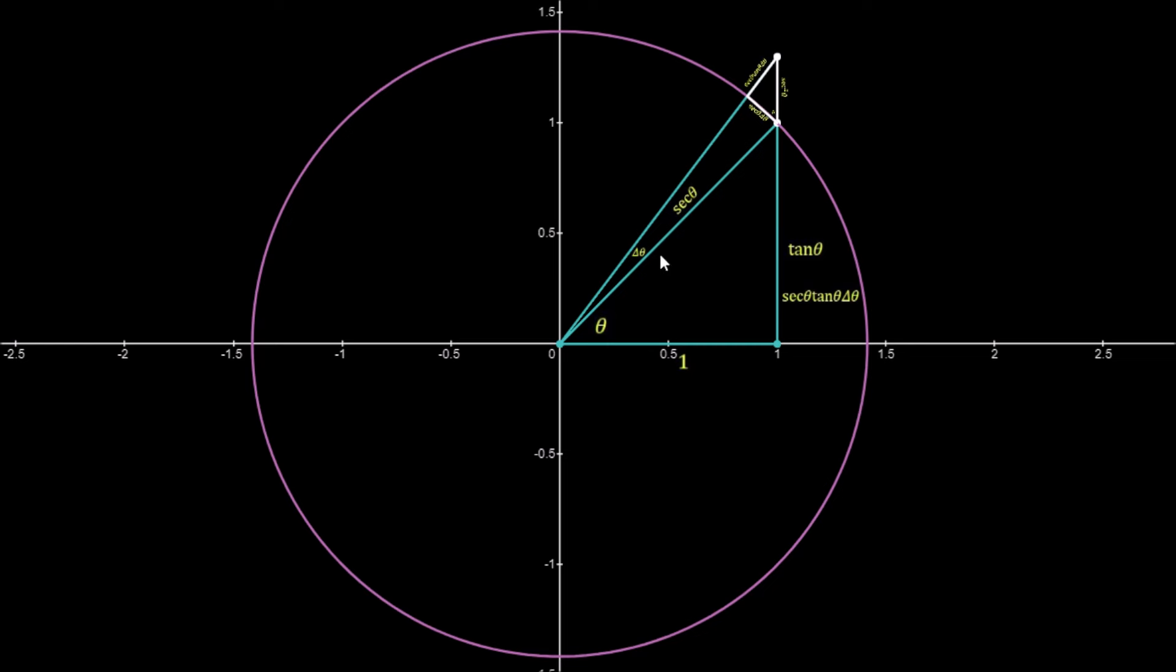And this length here will be sec theta. We've seen that we could generate the differentiation of tan theta by allowing this angle delta theta to tend towards 0.